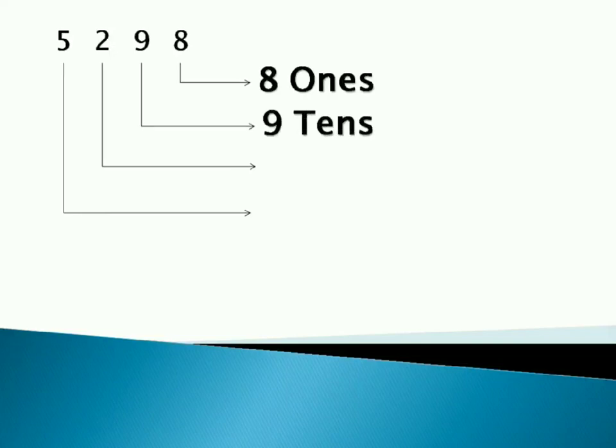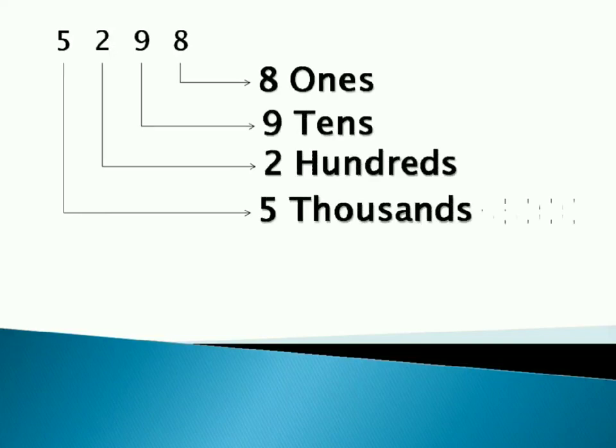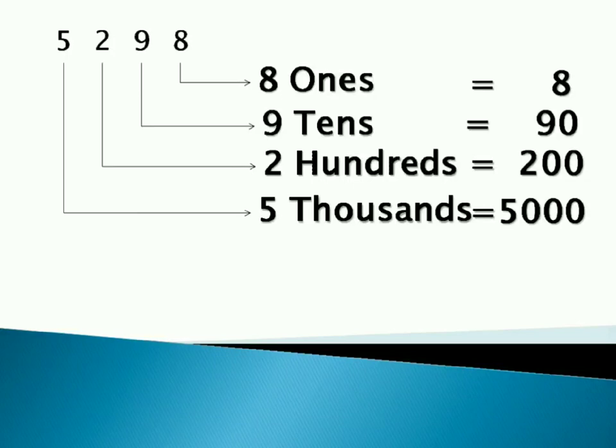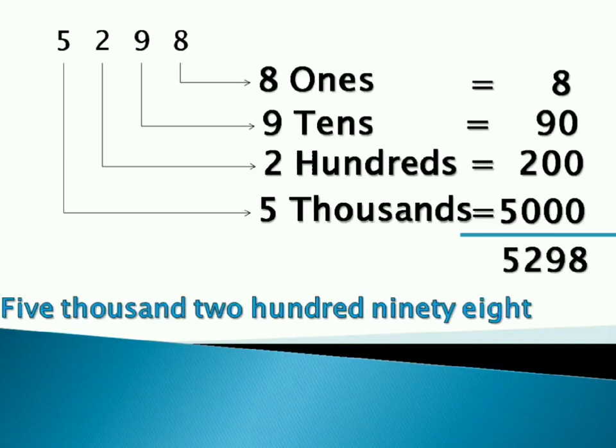Let's begin with number names. For the number 5298, we have eight ones, nine tens, two hundreds and five thousands, which is five thousand two hundred ninety eight. So number name becomes five thousand two hundred and ninety eight.